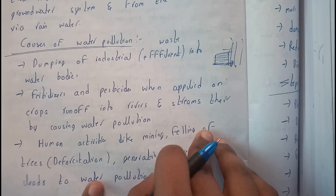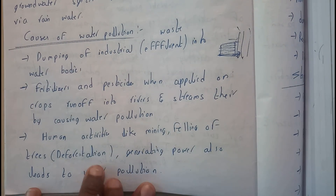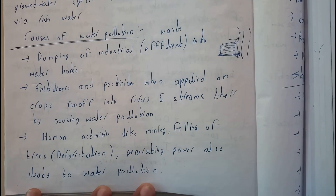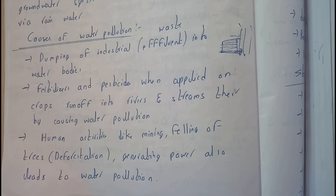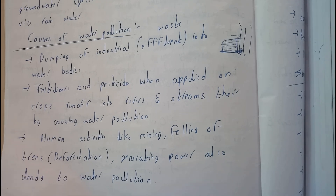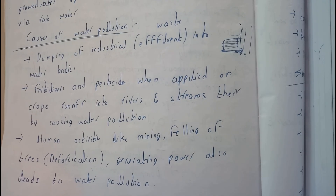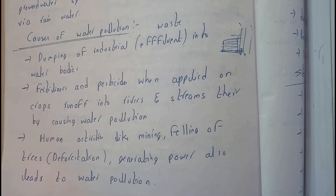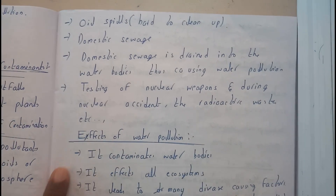Human activities like mining, deforestation, and generation of power also lead to water pollution. Power generation can increase water temperature — for example, when generating electricity from coal, water is used as a coolant. Once the water comes out of that chamber it is of no use and is completely polluted.